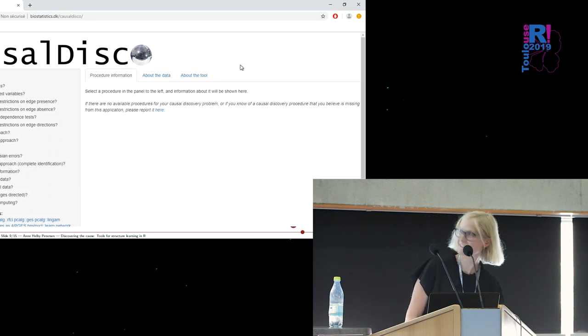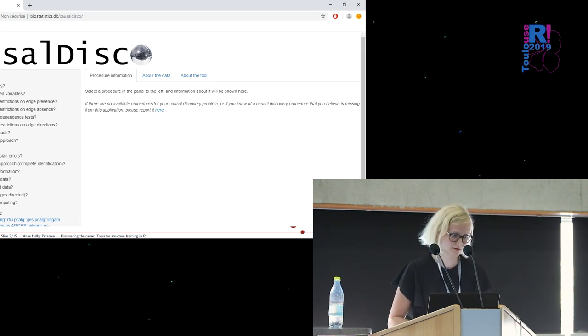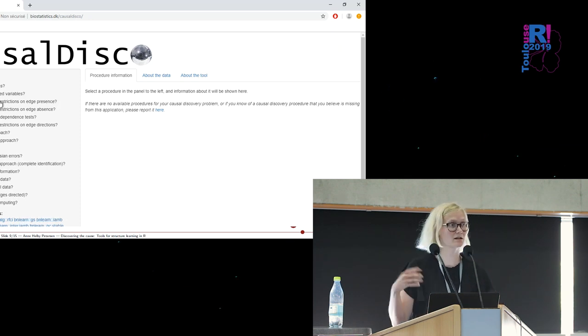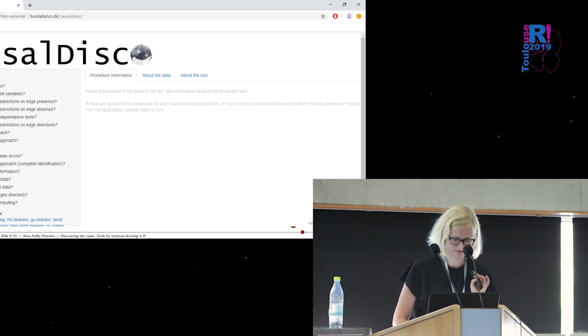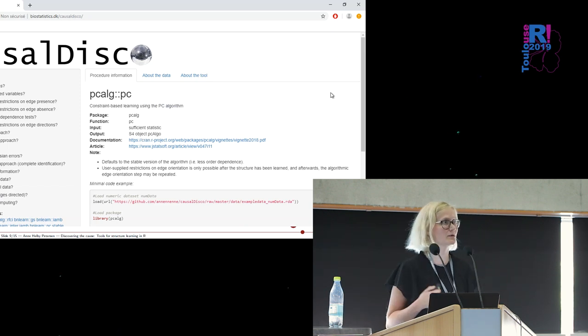Let's see if we can go there. This is the causal disco. The idea of this page is basically that you can choose which properties you need to have fulfilled. Let's say we have some numerical data. And then down here it updates what procedures fulfill those criteria that you choose. Maybe we also want to use something called constraint-based approach, or we want to have some restrictions on edge presence. We can add and remove assumptions and we get a little list of what the available procedures are. And then if we click one, let's say we click the first one, then we get a little information page.